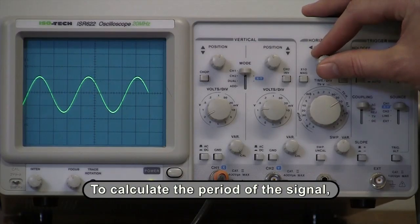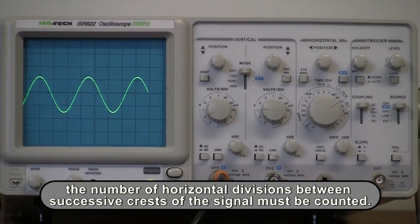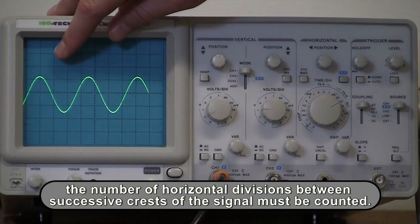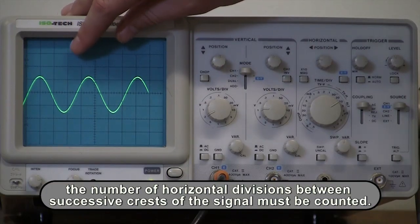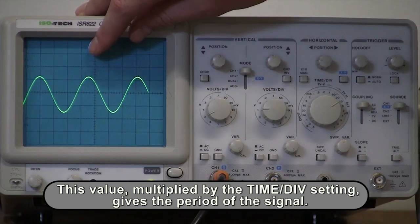To calculate the period of the signal, the number of horizontal divisions between successive crests of the signal must be counted. This number, multiplied by the time per division setting, gives the period of the signal.